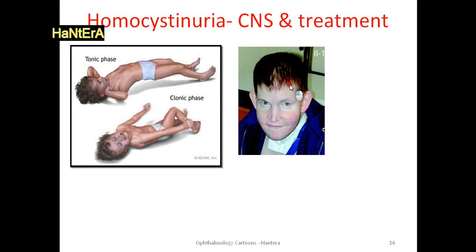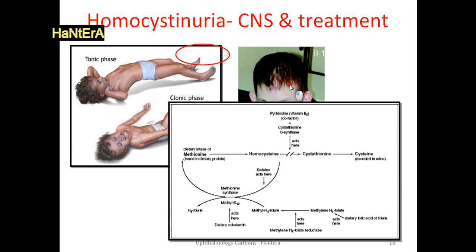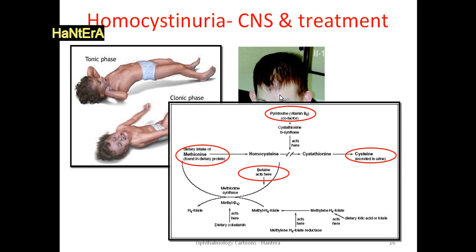Neonatal methionine restriction and low-protein diet help to prevent mental retardation and reduce the risk of lens dislocation and seizures. Many people are treated using high doses of vitamin B-6, also known as pyridoxine. Most will need treatment with trimethylglycine. A normal dose of folic acid supplement and occasionally adding cysteine to the diet can be helpful. Betaine is used to reduce concentrations of homocystine by promoting the conversion of homocystine back to methionine.